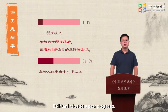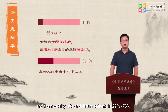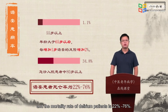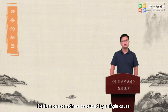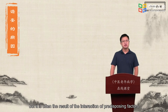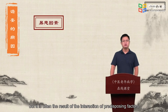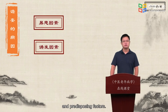Delirium indicates a poor prognosis, and the mortality rate of delirium patients is 22% to 76%. Delirium can sometimes be caused by a single cause, but it is often the result of the interaction of predisposing factors and precipitating factors.